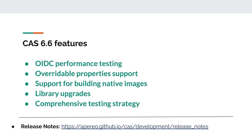For the testing strategy, the collection of end-to-end browser tests based on the Puppeteer framework in CAS continues to grow to cover more use cases and scenarios. At the moment, the total number of test scenarios is approximately 287, and the overall test coverage of the CAS codebase is approximately 94%.